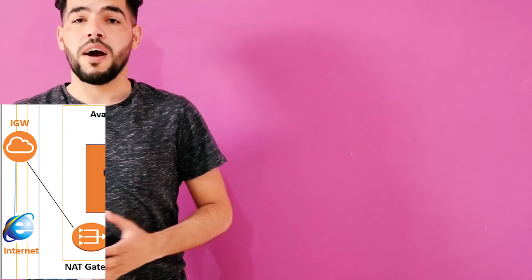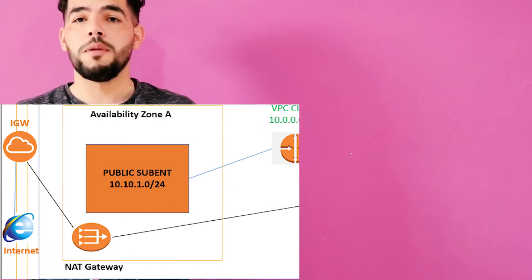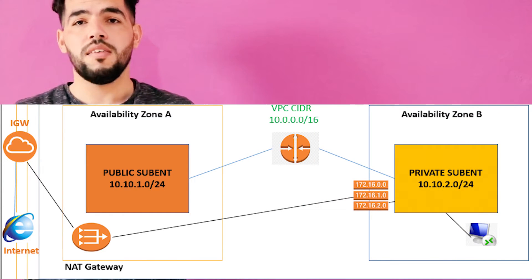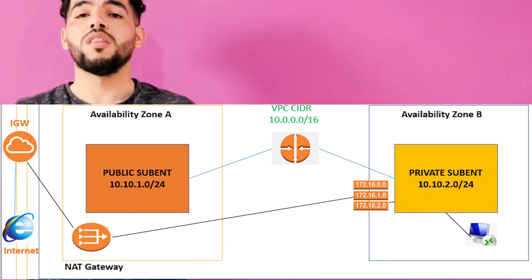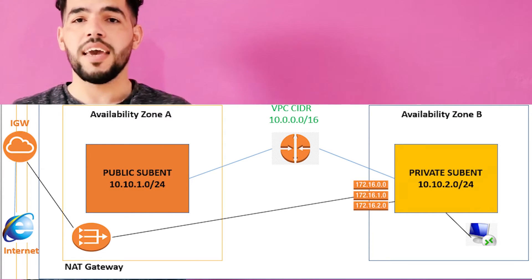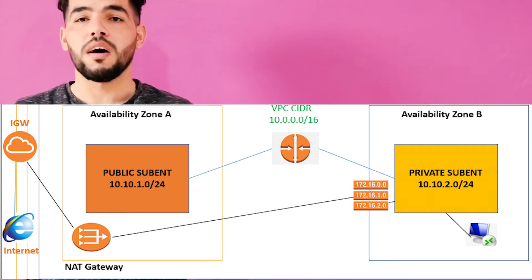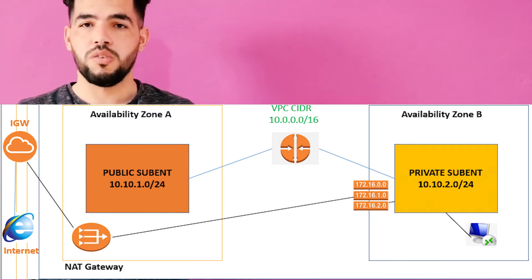Another case: if we have a machine in the private subnet and this machine needs to upload or download files from the internet, we need three things. We need the route table, and we also need the NAT Gateway — and this NAT Gateway should be in the public subnet — and we also need the IGW, or the Internet Gateway.